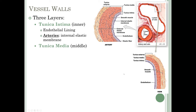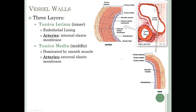The next layer is the tunica media — think 'media' as middle. This is the middlemost layer, shown in red in both images, and it is dominated by smooth muscle. Notice that the artery has much more smooth muscle. Arteries also have an external elastic membrane outside their tunica media, so the tunica media in arteries is bordered by an elastic membrane on both the inside and outside.